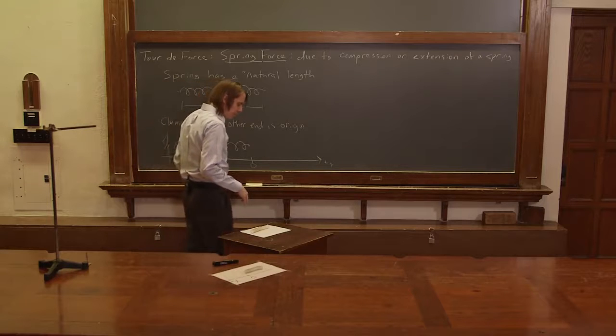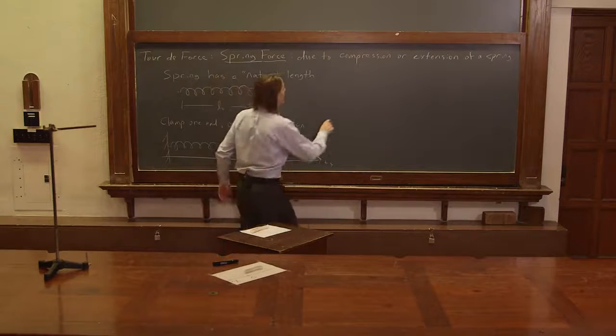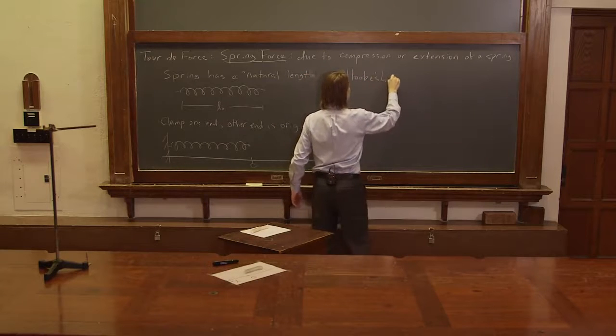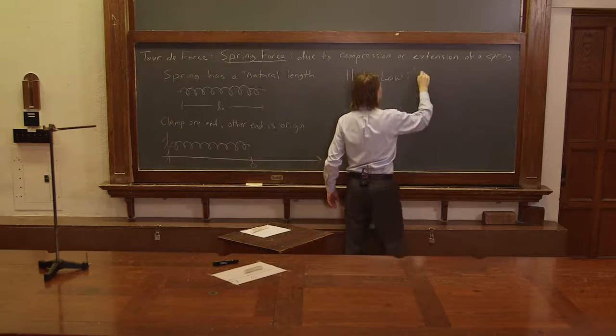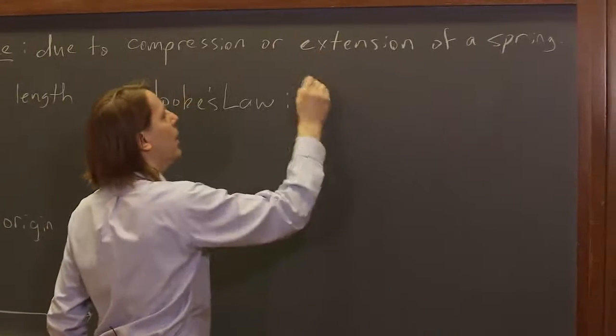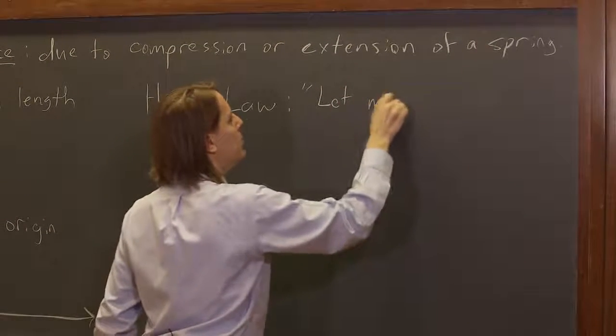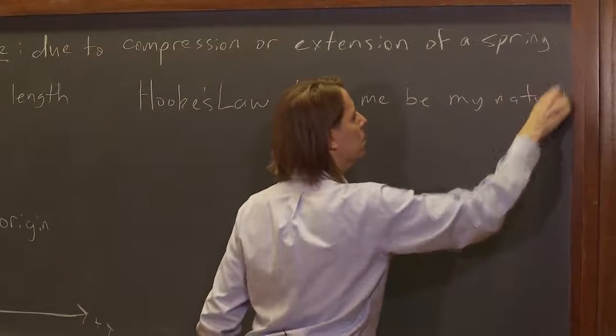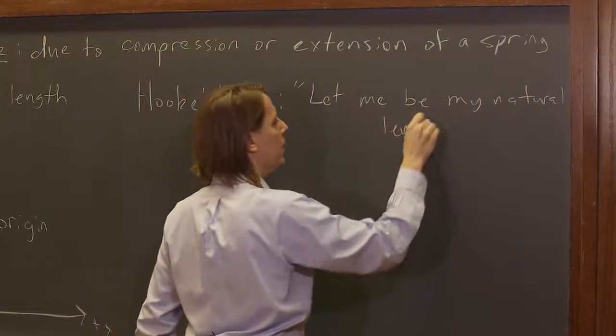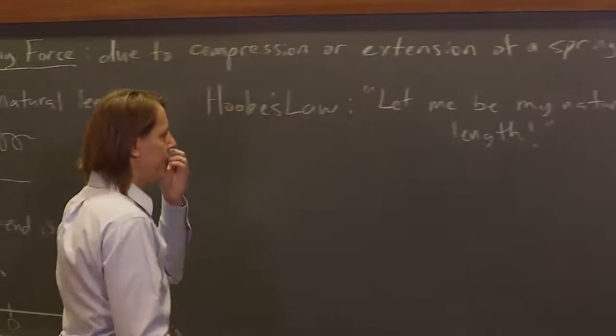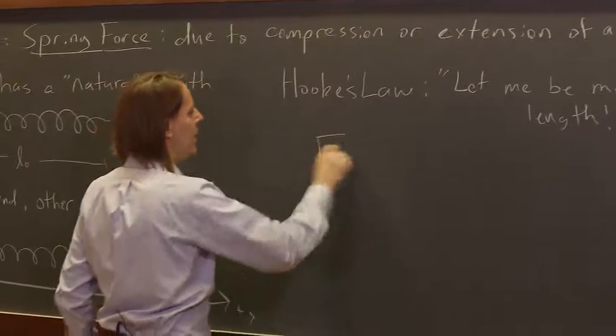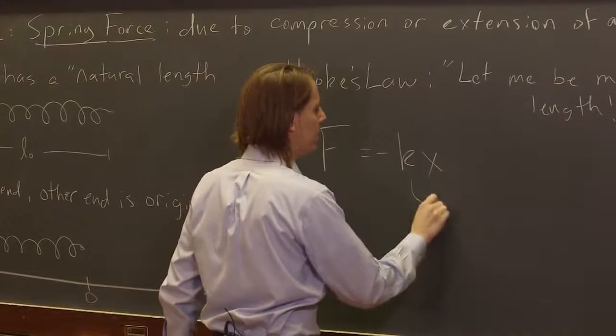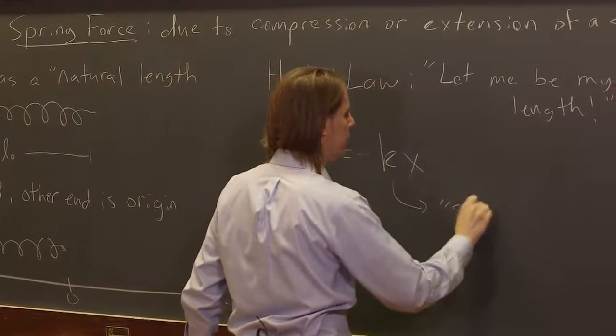So if we want to write that in terms of physics, it's called Hooke's Law, which is the spring saying, let me be my natural length. And it's desperate too, so I'll put an exclamation point. So Hooke's Law then, F equals minus kx, where k is the spring constant.